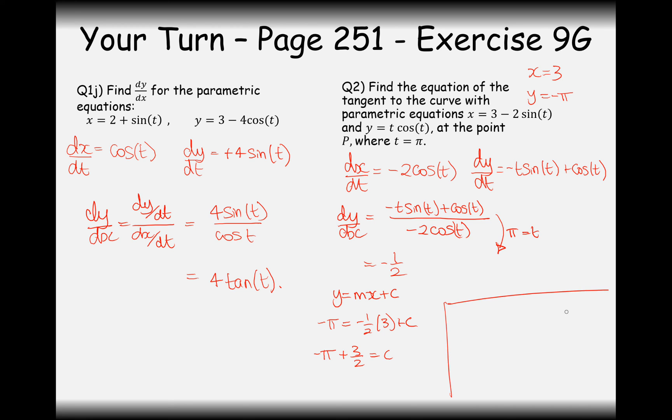So therefore, our final answer then is going to be y equals minus a half x minus pi plus 3 over 2. There we are. So that's how we answer that question there. And similar, if you were working out an equation of a normal, you just do minus 1 over the gradient.